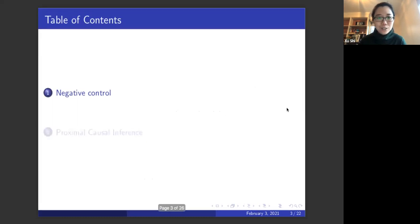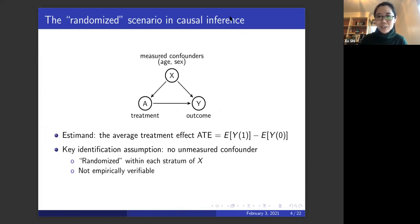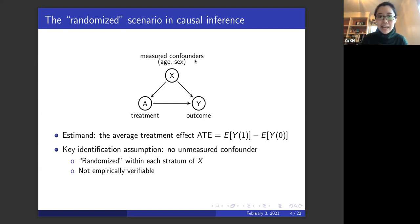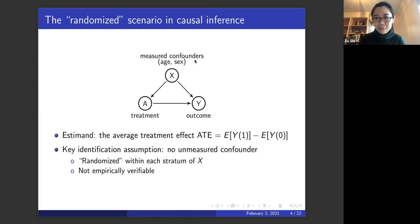I'll talk about negative controls first. Let me give a little background in causal inference mainly to introduce some notation. We use letter A to denote the treatment, letter Y to denote the outcome, and letter X to denote the measured confounders — covariates such as age, gender, race, and other measured confounders. In causal inference, the most commonly estimated quantity is the average treatment effect, or ATE, which is the mean difference between the pair of potential outcomes Y1 and Y0.